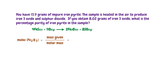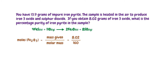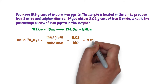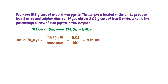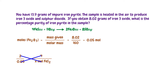The mass given is 8.02 grams. The molar mass of iron(III) oxide is 160 grams per mole. 8.02 over 160 gives 0.05 moles. We can now use the moles of iron(III) oxide to find the moles of iron pyrite that was used. The mole ratio of iron(III) oxide to iron pyrite is 2 to 4. To produce 0.05 moles of iron(III) oxide, cross-multiplying gives 0.1 moles of iron pyrite.